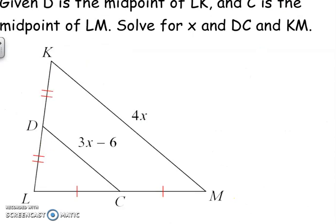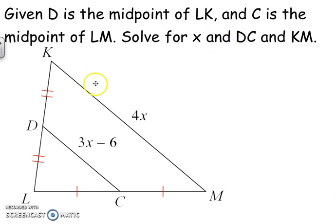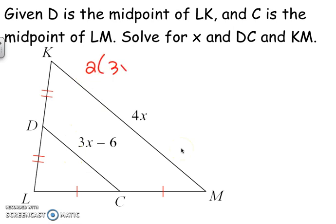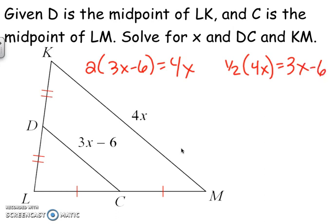It gets a little bit harder because there can be equations. D is the midpoint of LK and C is the midpoint of LM. You need to solve for X, then find DC and find KM. You can set this equation up two different ways. You can say that two of the mid-segments will equal the whole third side — so two of the (3X minus 6) will equal 4X. Or you can say half of the third length equals the mid-segment. I like the distributive property way better, and get 6X minus 12 equals 4X.